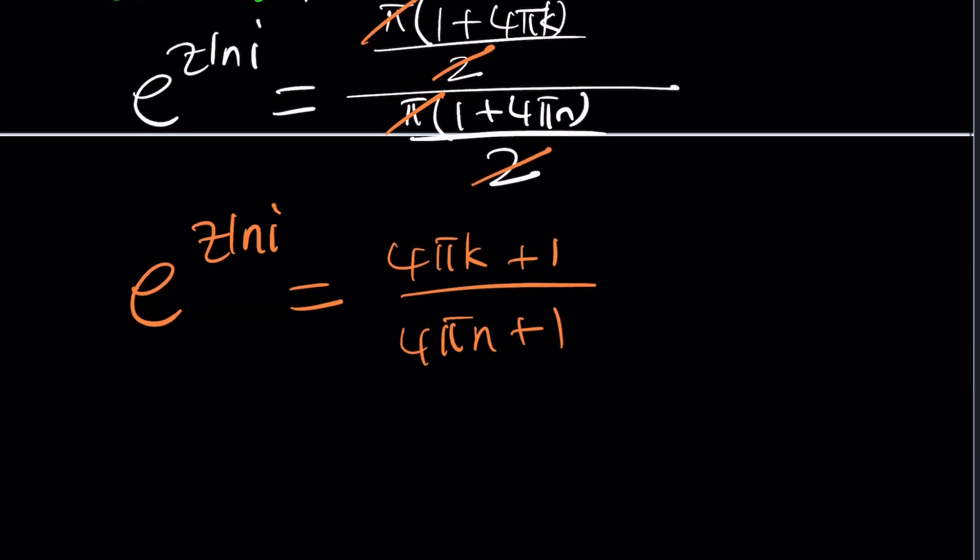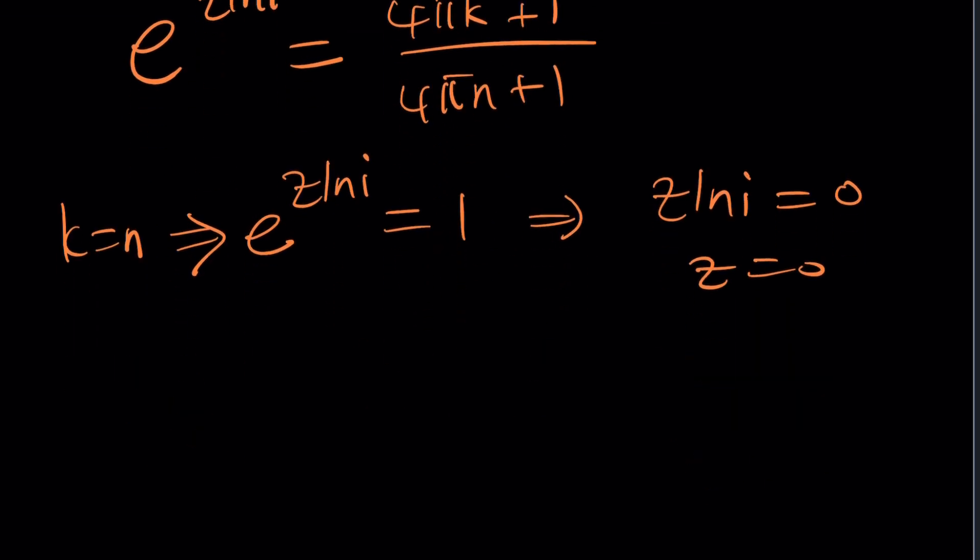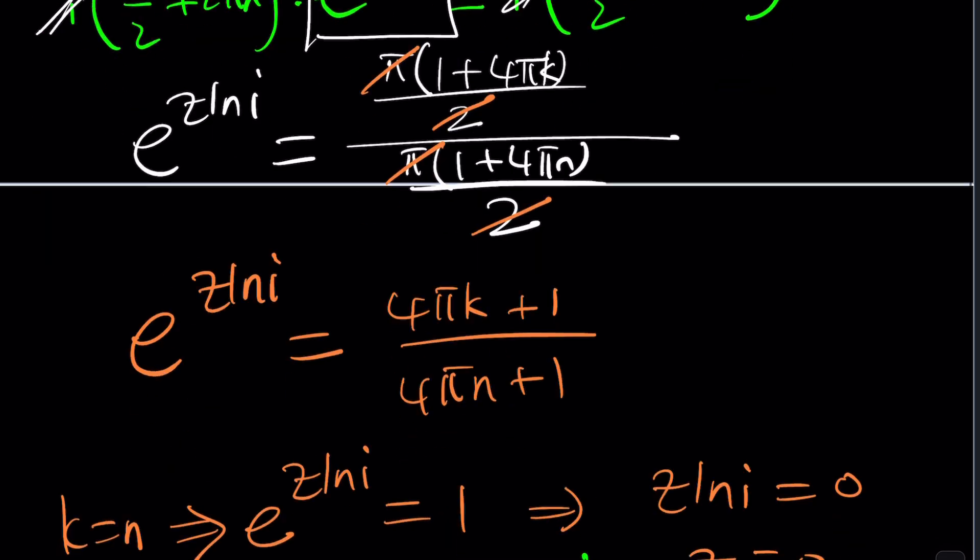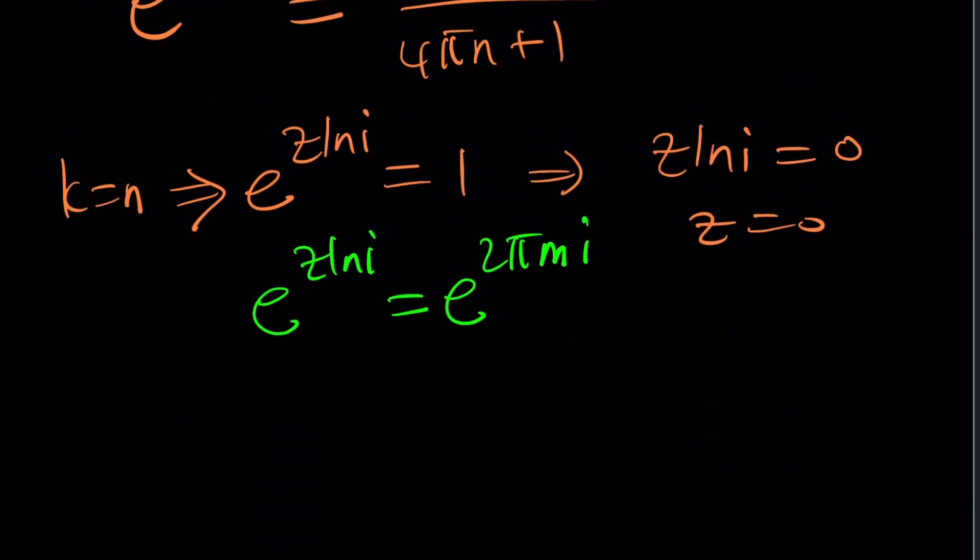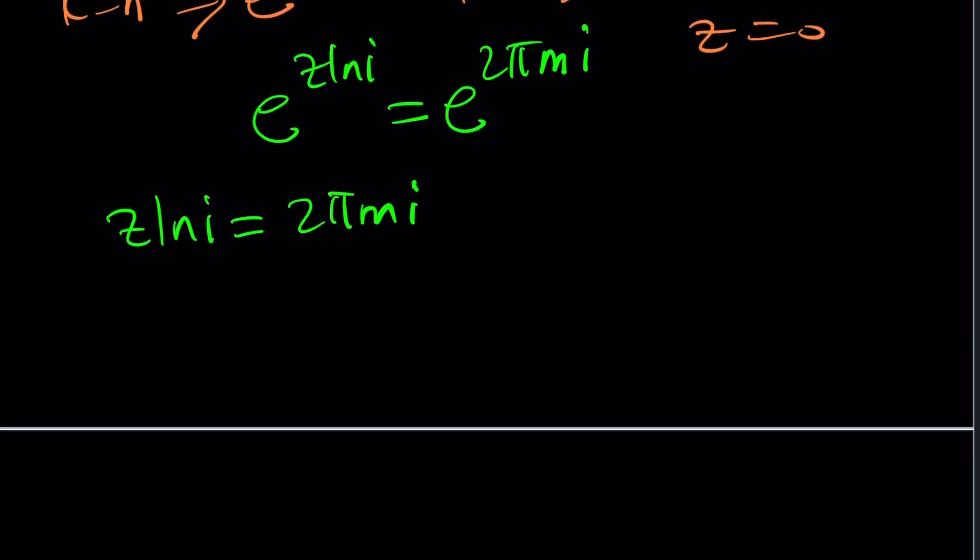What happens if N and K are equal? If K equals N, which they don't have to be, but if they are equal, then we get something nice because this becomes 1. We get e to the power Z ln i equals 1. From here you can safely say that Z ln i is equal to 0 and Z is equal to 0, right? Yes and no. Why? So basically, this doesn't only give you 0, because you're allowed to replace 1 with something like e to the power 2πMi. Notice that Z is not only 0. Z actually becomes something interesting. Z ln i equals 2πMi, and if you divide both sides by ln i, Z equals 2πMi divided by ln i.